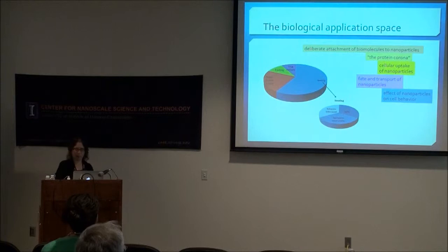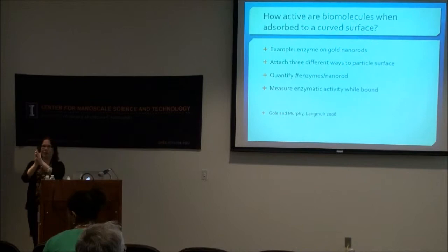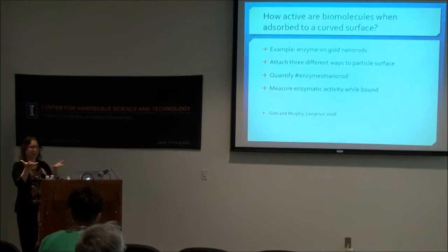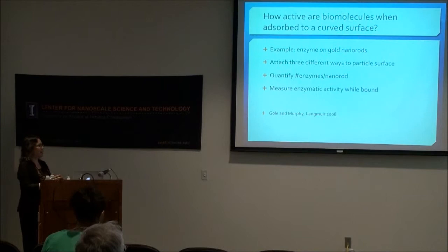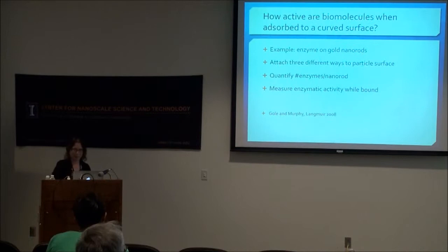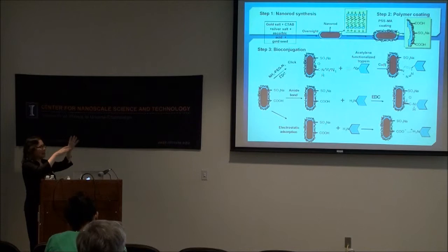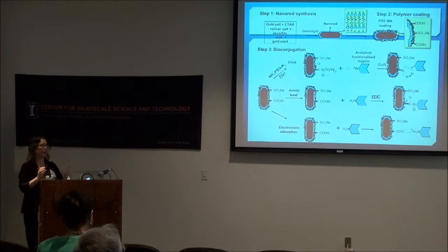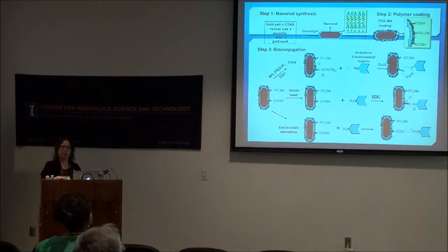My first short story is at the molecular level: we take an enzyme and attach it to our rods three different ways, then quantify how many proteins are on the particle per particle and measure how active it still is. The enzyme is trypsin, which digests proteins. I'm showing the particle synthesis with that bilayer, then one round of polyelectrolyte layer-by-layer wrapping to display net negative charges at pH 7. We have carboxylic acid groups for later use and sulfonate groups to keep us negatively charged throughout, avoiding aggregation.